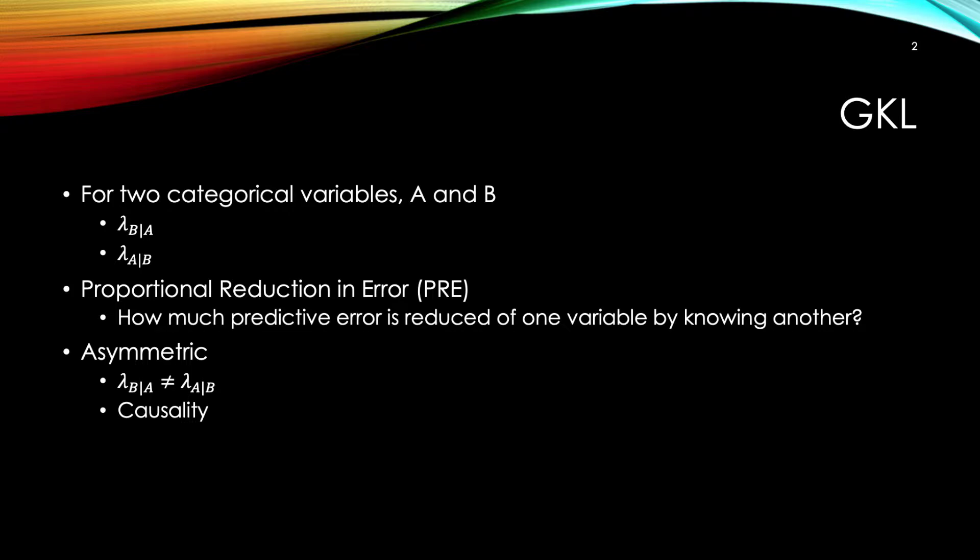Let's start to understand GKL by learning about the types of variables it operates on. GKL operates on categorical variables. If you recall, categorical variables are simply variables whose values are finite and have no intrinsic ordering. Let's say we have two categorical variables, A and B, and we want to measure the error in predicting B and the error in predicting B when we know A.